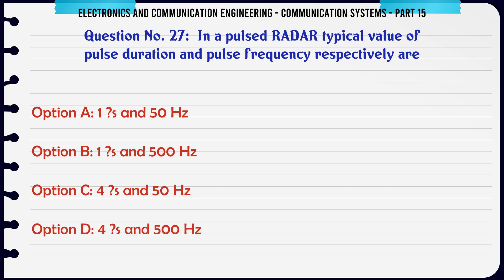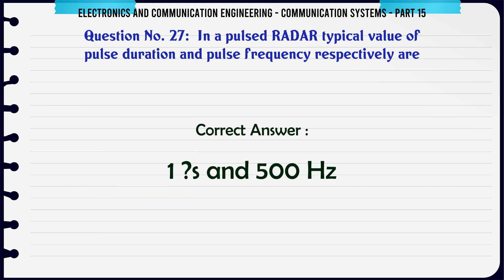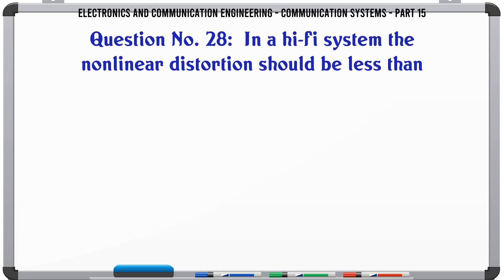In a pulsed radar typical values of pulse duration and pulse frequency respectively are: A 1 microsecond and 50 Hz, B 1 microsecond and 500 Hz, C 4 microseconds and 50 Hz, D 4 microseconds and 500 Hz. The correct answer is 1 microsecond and 500 Hz.